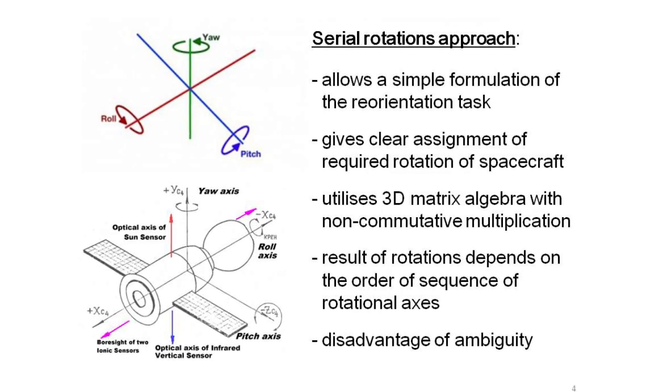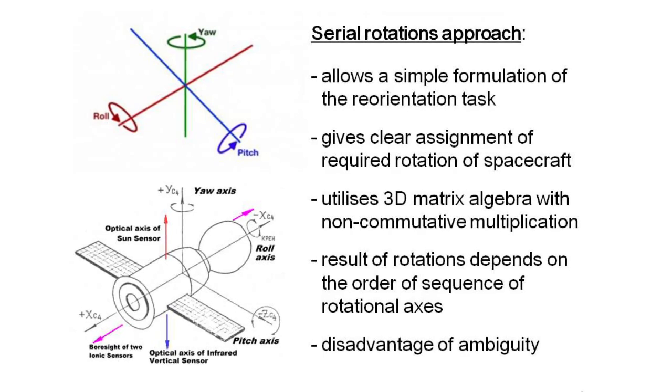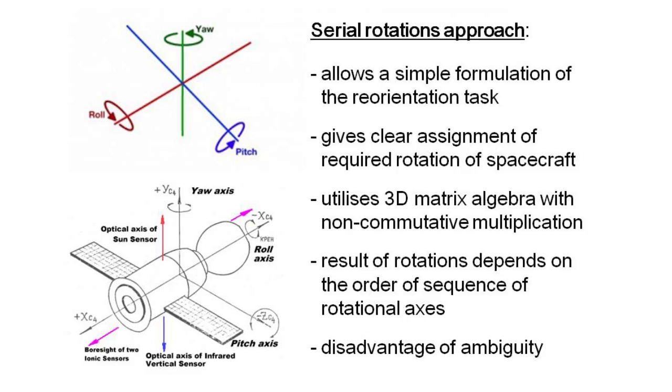We concede that the serial rotations approach allows a simple formulation of the reorientation task, giving clear assignment of required rotation of spacecraft. It is, though, well known that due to non-commutativity of the three-dimensional matrix algebra used in this case, the result of such rotations strongly depends on the order of sequence of rotational axes. Therefore, this approach, mathematically based on the three-dimensional vector group of orthogonal rotations, has disadvantage of ambiguity.